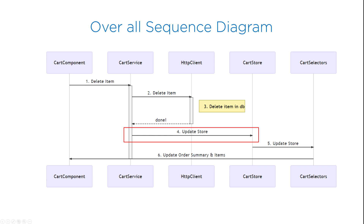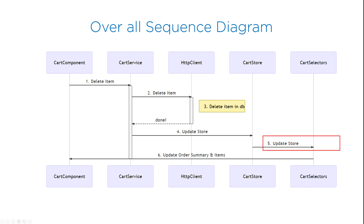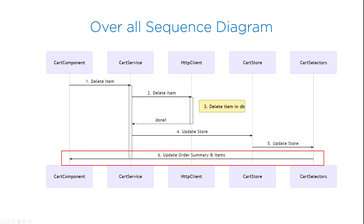After that, the cart service will update the cart store by deleting the same item from the store. The moment the cart store is updated, our selectors will get new values and they will finally update the cart component. Therefore you will see the item deleted from the cart item list, and the order view will also be updated with the new order total cost.